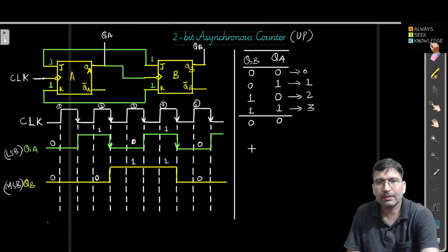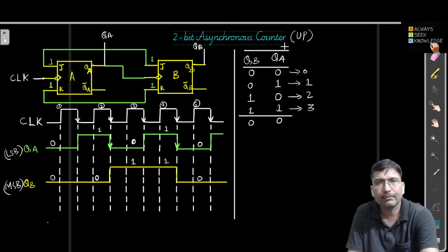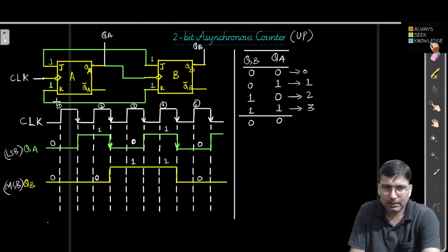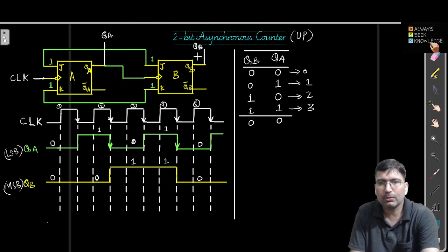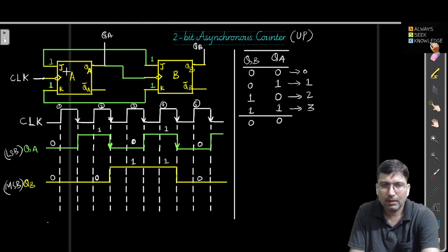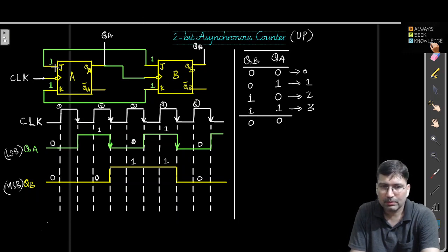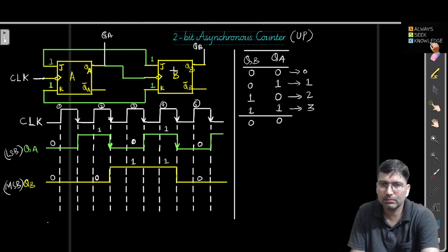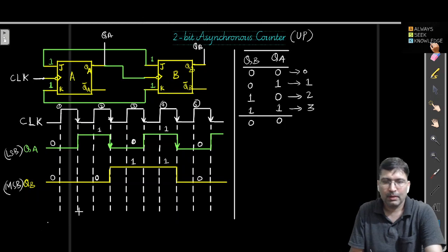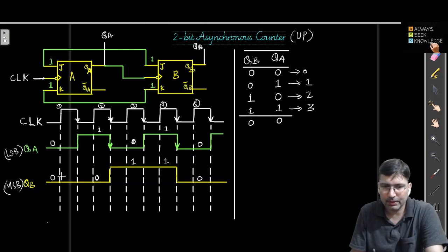We have already discussed the 2-bit asynchronous up counter in the previous lecture. For a 2-bit counter we use two flip-flops — either JK or T flip-flop — and we use the toggling property of the JK or T flip-flop in order to construct the counter. I have already explained how this circuit works as an up counter.